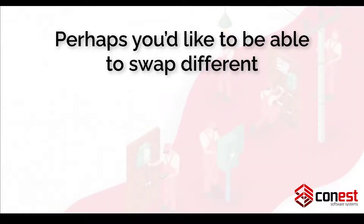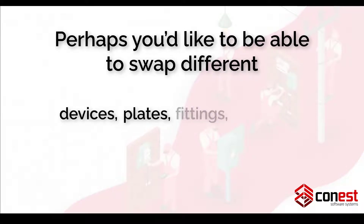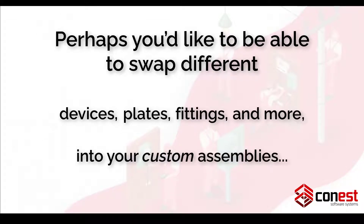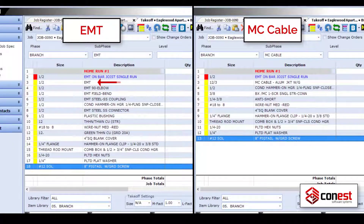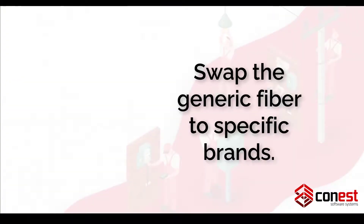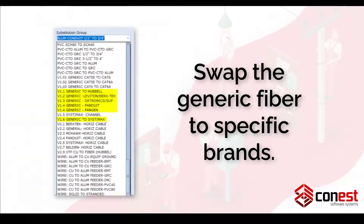Perhaps you'd like to be able to swap different devices, plates, fittings, and more into your custom assemblies and have IntelliBid automatically update every other item in the assembly that is impacted by that change. If you're running fiber, you can even swap the generic fiber to specific brands.